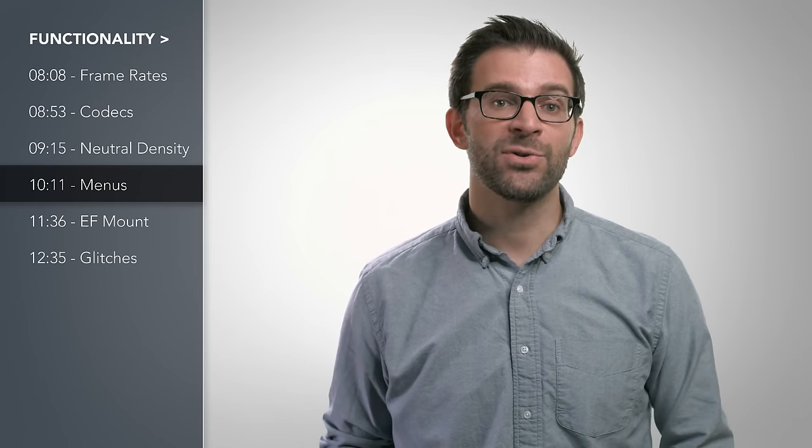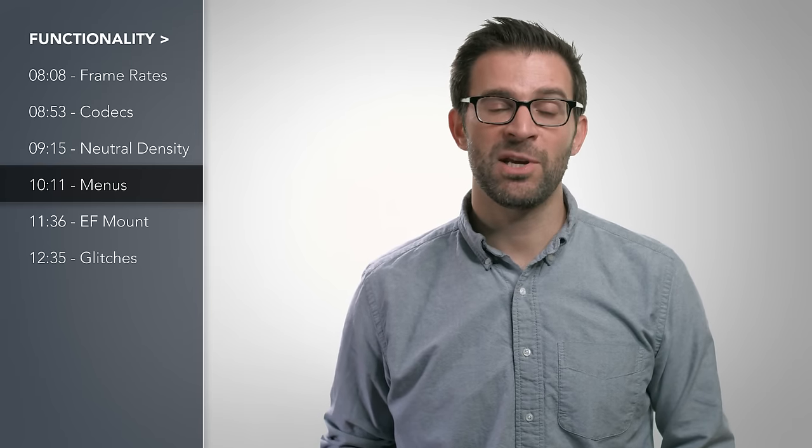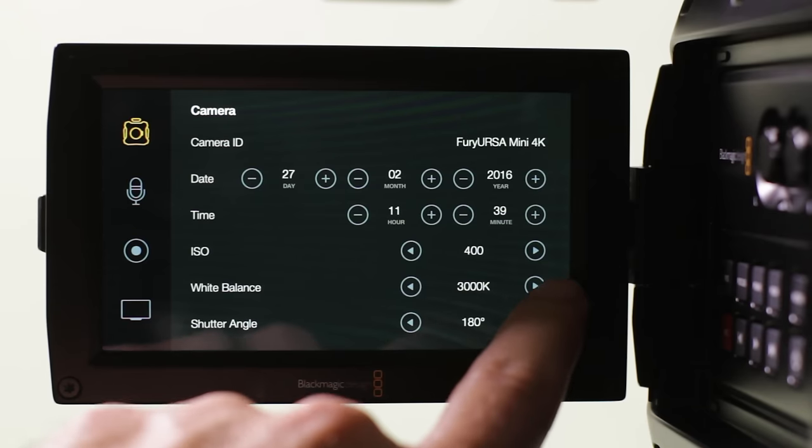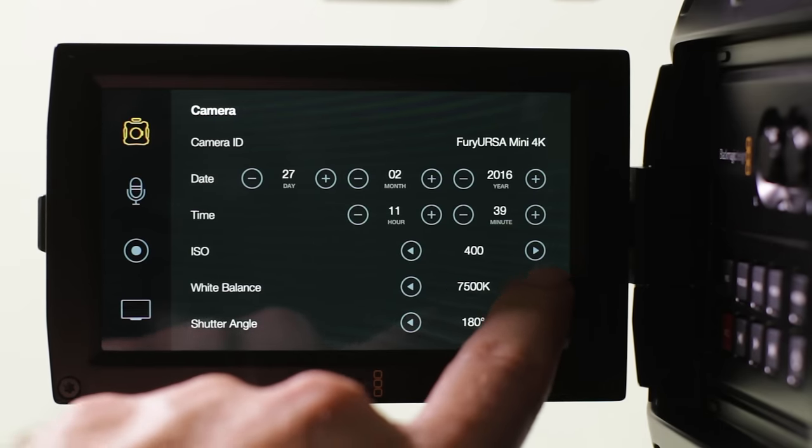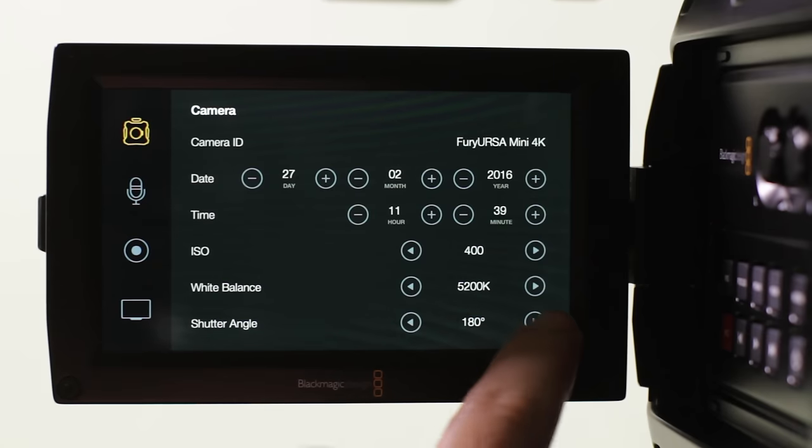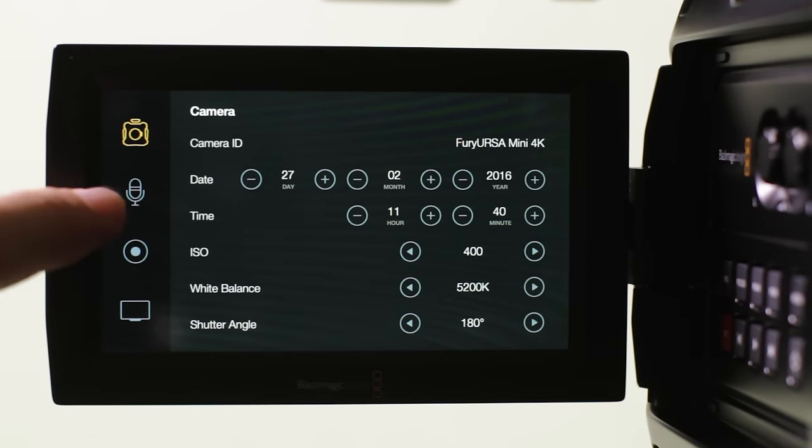Now menus on the camera. Other reviews have gone way in depth on menus, so I'll just speak to a few items. First, white balance. I'm fine with 18 increments from 2800K to 8000K. Shutter angle. I wish that you could switch between shutter angle and shutter speed. Sure, I could teach myself how to convert these, but I learned on speed first, so it's hard to convert it in my head.